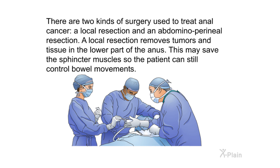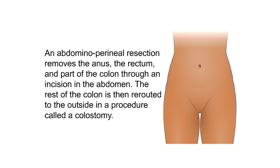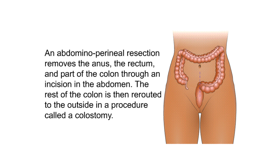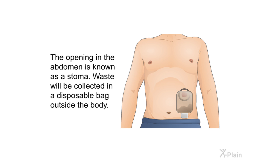There are two kinds of surgery used to treat anal cancer: a local resection and an abdominal perineal resection. A local resection removes tumors and tissue in the lower part of the anus, and may save the sphincter muscles so the patient can still control bowel movements. An abdominal perineal resection removes the anus, the rectum, and part of the colon through an incision in the abdomen. The rest of the colon is rerouted to the outside in a procedure called a colostomy, with the opening known as a stoma, and waste collected in a disposable bag outside the body.